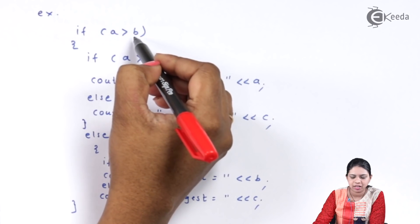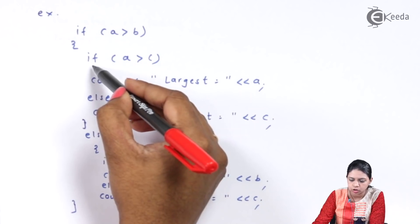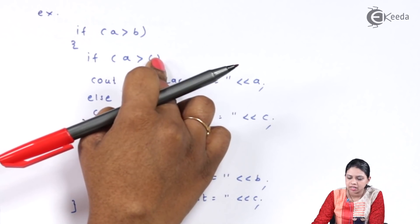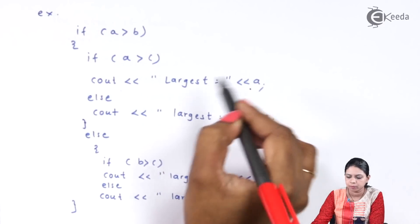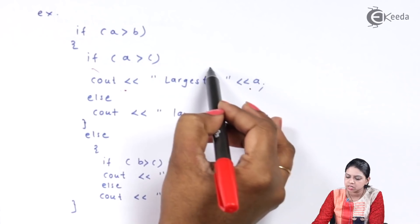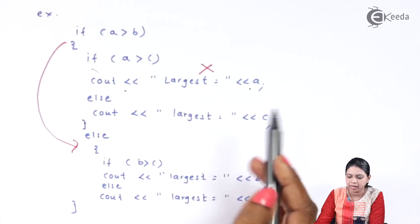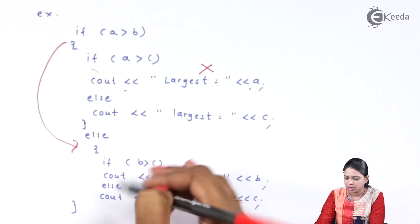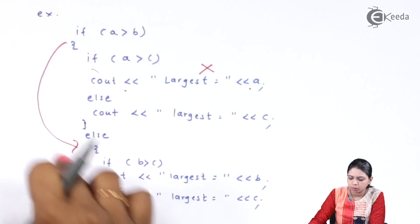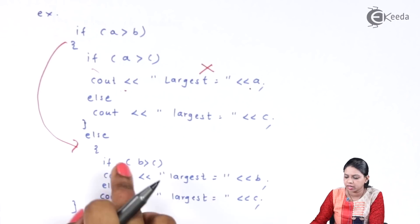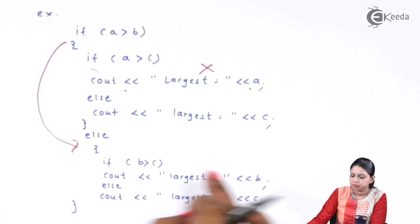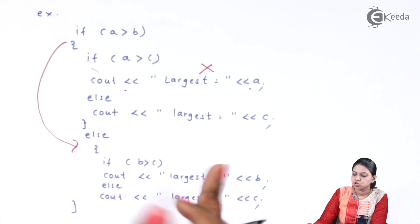If A is greater than B, you jump inside and check if A is greater than C also. If A is greater than C, then print 'largest is A'; else print 'largest is C'. Now if A is not greater than B, you skip this part and jump to the else part, then check if B is greater than C. If B is greater than C, then largest is B; otherwise largest is C.